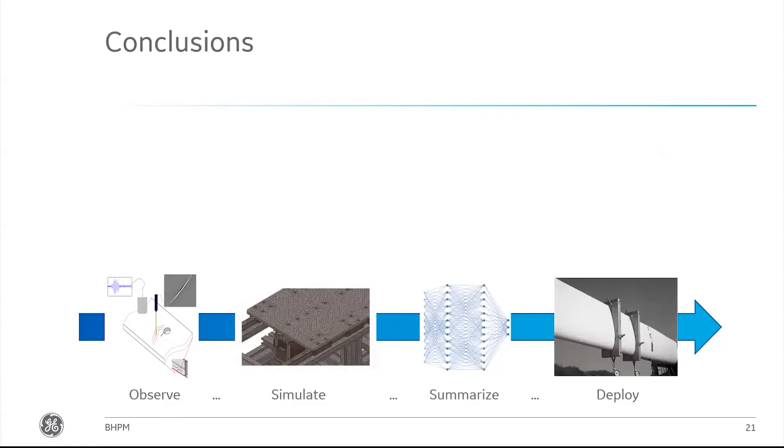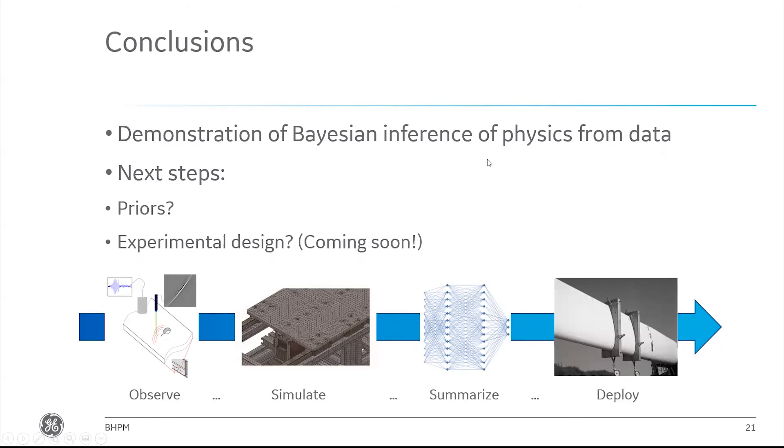To wrap it up, we showed that it's possible to do Bayesian inference to learn physics from data. There's some interesting things we want to do in the future, thinking more critically about what priors we are using, as well as whether we can be more intelligent about the experiments we're collecting, given that this physics distribution over functions is the thing we're trying to reduce uncertainty about. We've got some results we're pretty excited about that hopefully we'll be able to share with you soon.